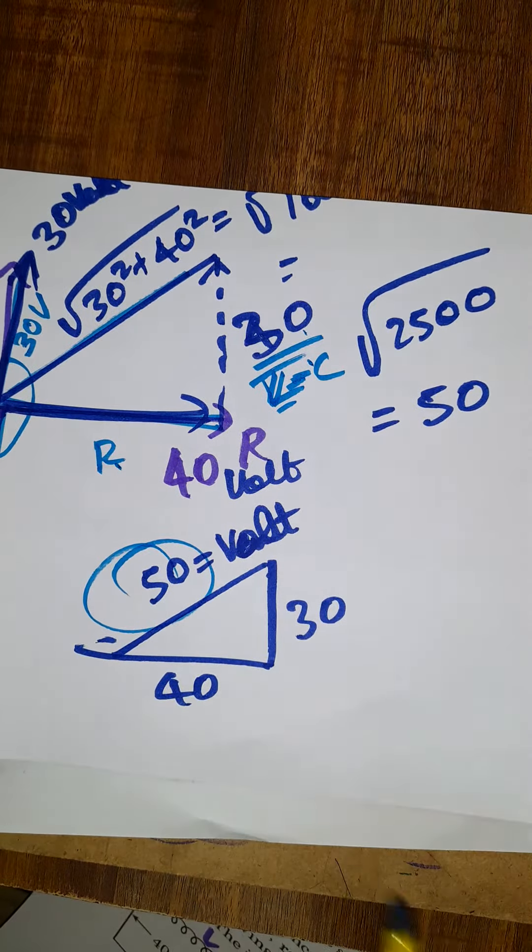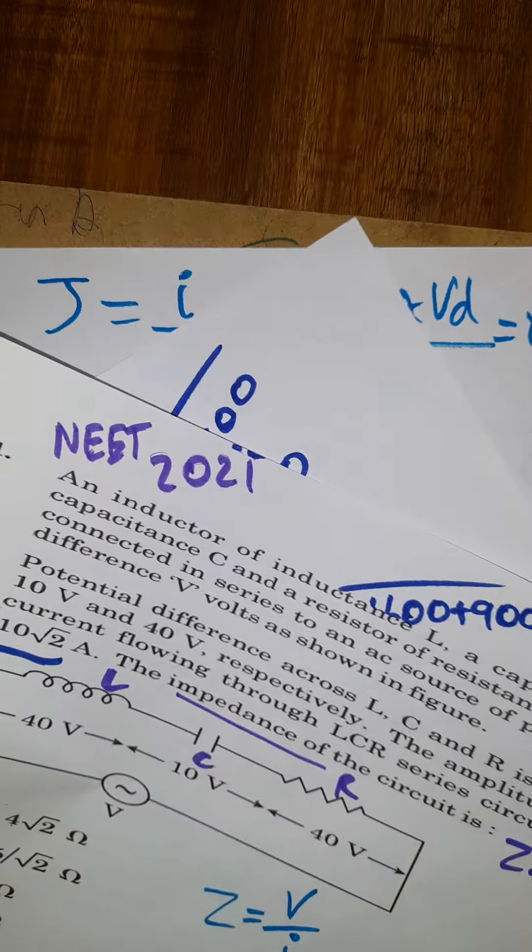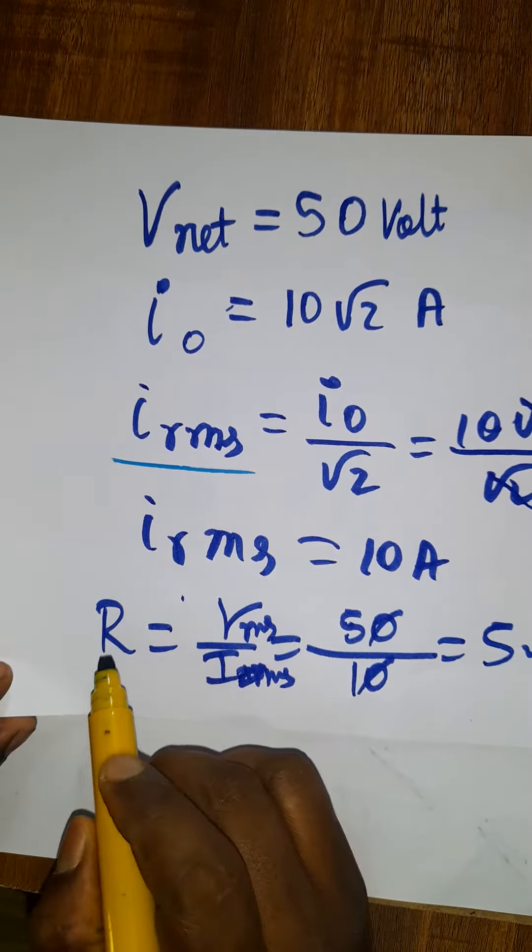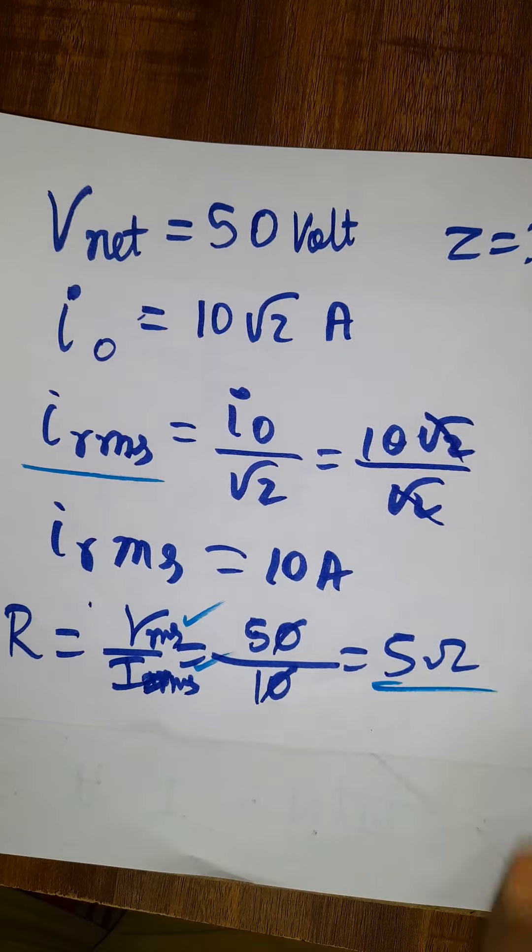Already given in the question, peak current is given. From peak current you can find what is IRMS value. Then finally, impedance is equal to VRMS divided by IRMS. That's 5 ohms. Thank you.